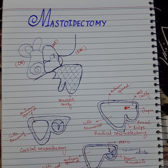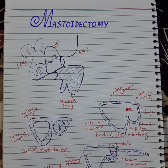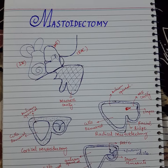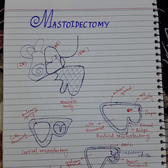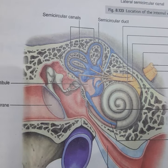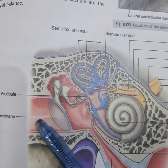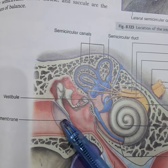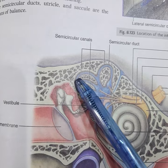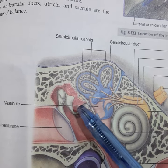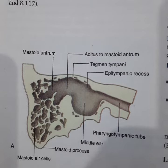To understand the concept of mastoidectomy, first we will look at the relationship of the mastoid cavity with the middle ear and external auditory canal. In this diagram you can see the middle ear cavity - anteriorly it is continuous with the external auditory canal, and posteriorly it is continuous with the mastoid cavity through the aditus to the mastoid antrum.